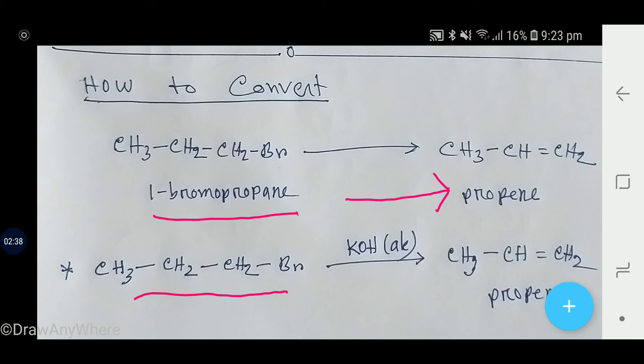If we add here alcoholic potassium hydroxide, then this bromine will take a hydrogen from this carbon. So a double bond will come between these two carbons.